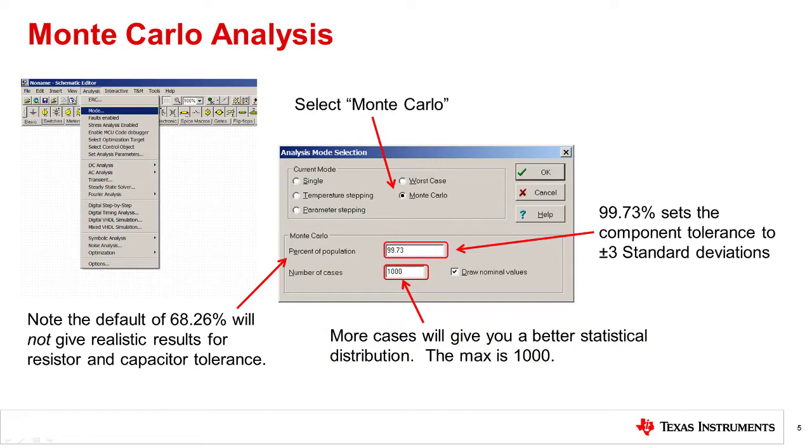This will cause the simulation to rerun 1,000 times using random resistor values according to the Gaussian distribution. In general, you should set this number as high as possible to get a good statistical result. The only disadvantage to setting this to the maximum limit of 1,000 is that it will increase simulation time.